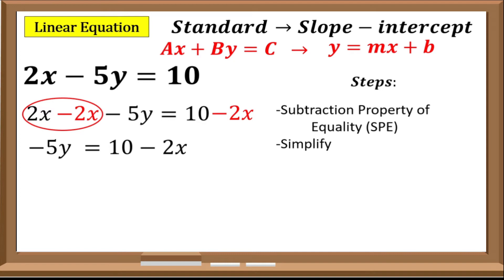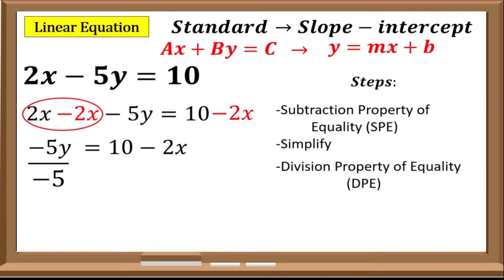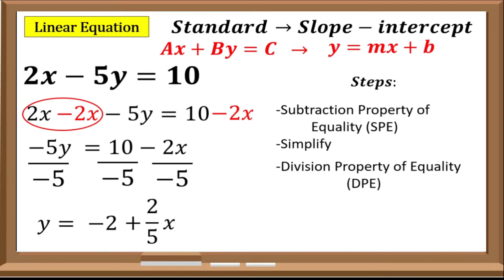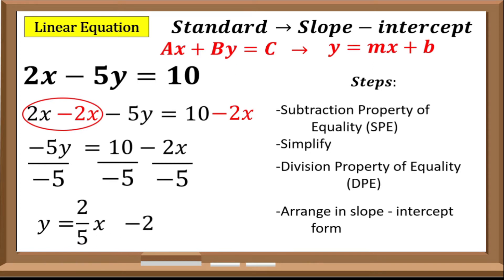Since the numerical coefficient of y in slope-intercept form is 1, we will be eliminating negative 5. To do that we will be using the division property of equality. So that is negative 5y divided by negative 5, 10 divided by negative 5, and negative 2x divided by negative 5. That gives y equals negative 2 plus 2 over 5x. Arranging into slope-intercept form, the slope-intercept form of 2x minus 5y equals 10 is y equals 2 over 5x minus 2.